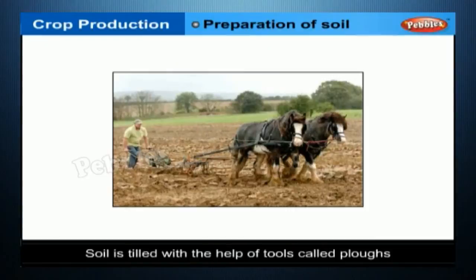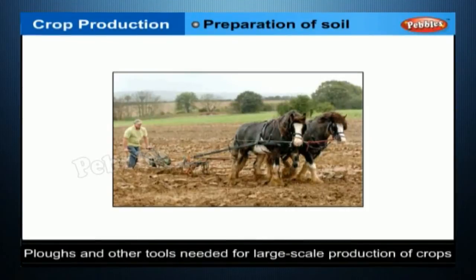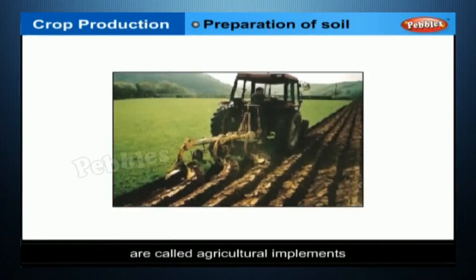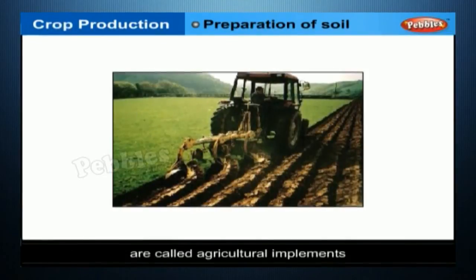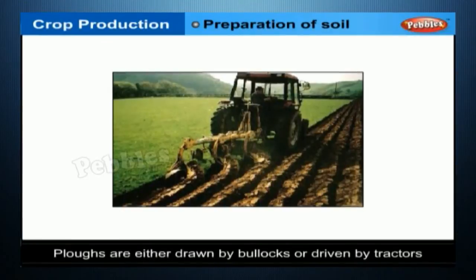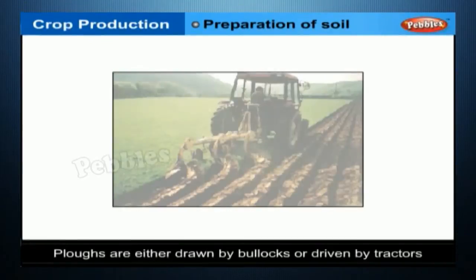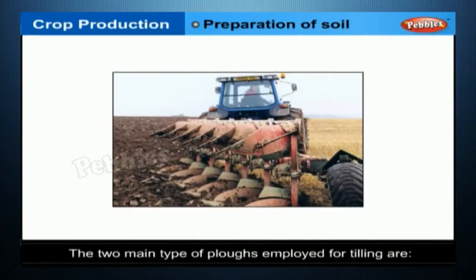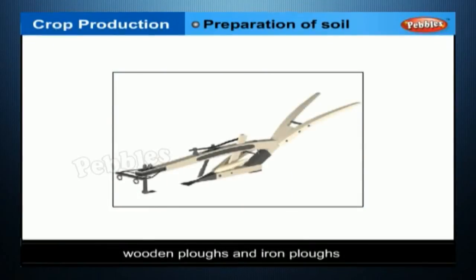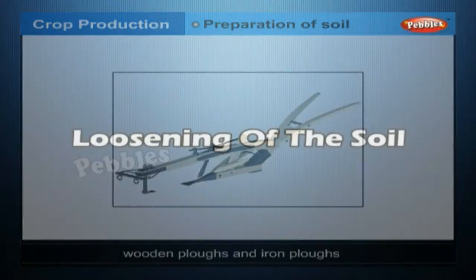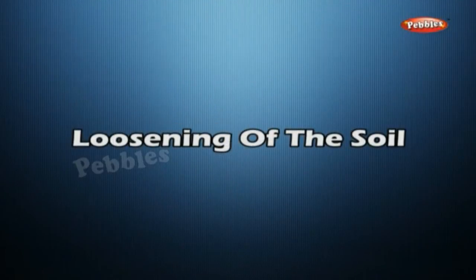Soil is tilled with the help of tools called plows. Plows and other tools needed for large scale production of crops are called agricultural implements. Plows are either drawn by bullocks or driven by tractors. The two main types of plows employed for tilling are wooden plows and iron plows.